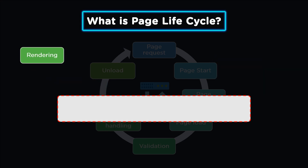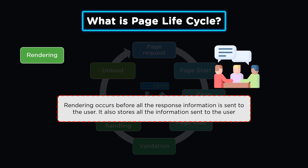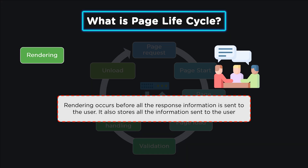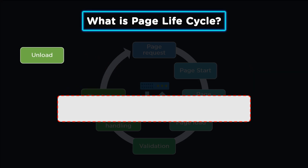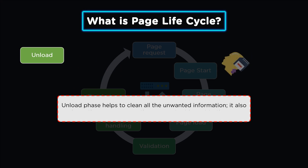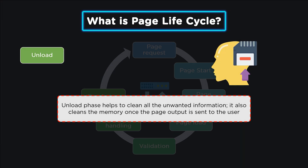The seventh phase is rendering. It occurs when all the response information has been sent back to the user, and it also stores all the information that is being sent. The eighth and final stage of the page life cycle is unload, which cleans all the unwanted information and memory once the output is sent back to the user.